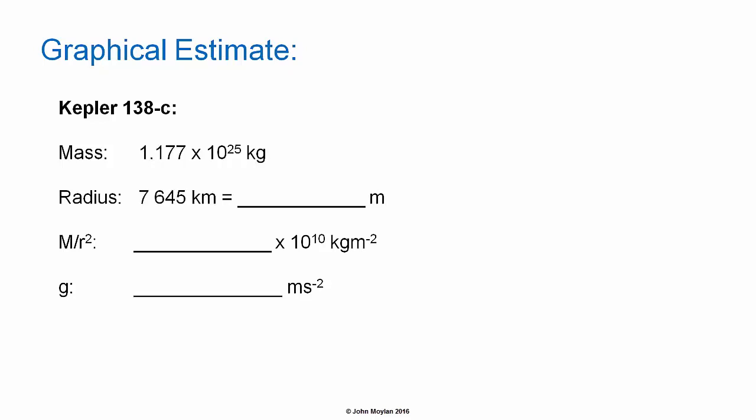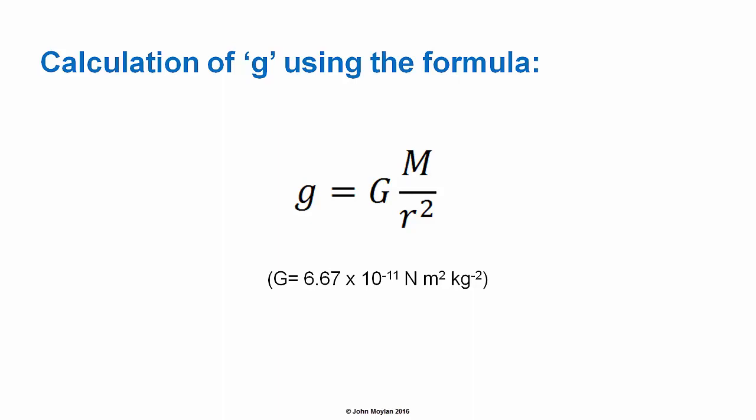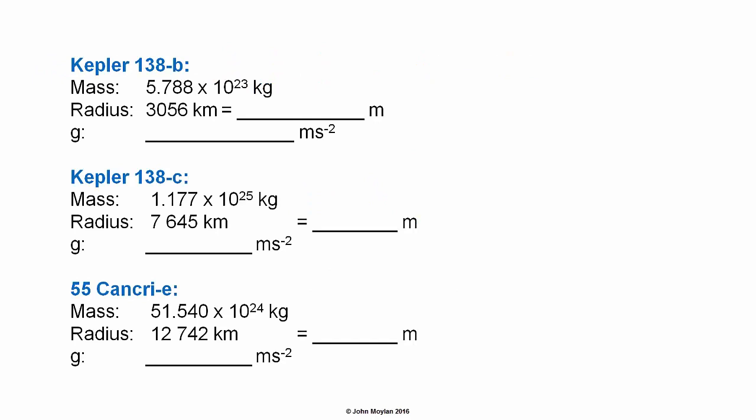For Kepler 138 c, use the same procedure, then 55 Cancri e the same procedure again. Then calculate the value of g using the formula: g equals capital G, the universal gravitational constant, multiplied by the mass of the planet in kilograms divided by r² — the distance from the centre of mass in meters squared. You'll find in the notes a section laid out where you can put in your calculated values. Note that g is simply capital G multiplied by M/r², and you have already calculated M/r², so it's simply a matter of multiplying by the universal gravitational constant.